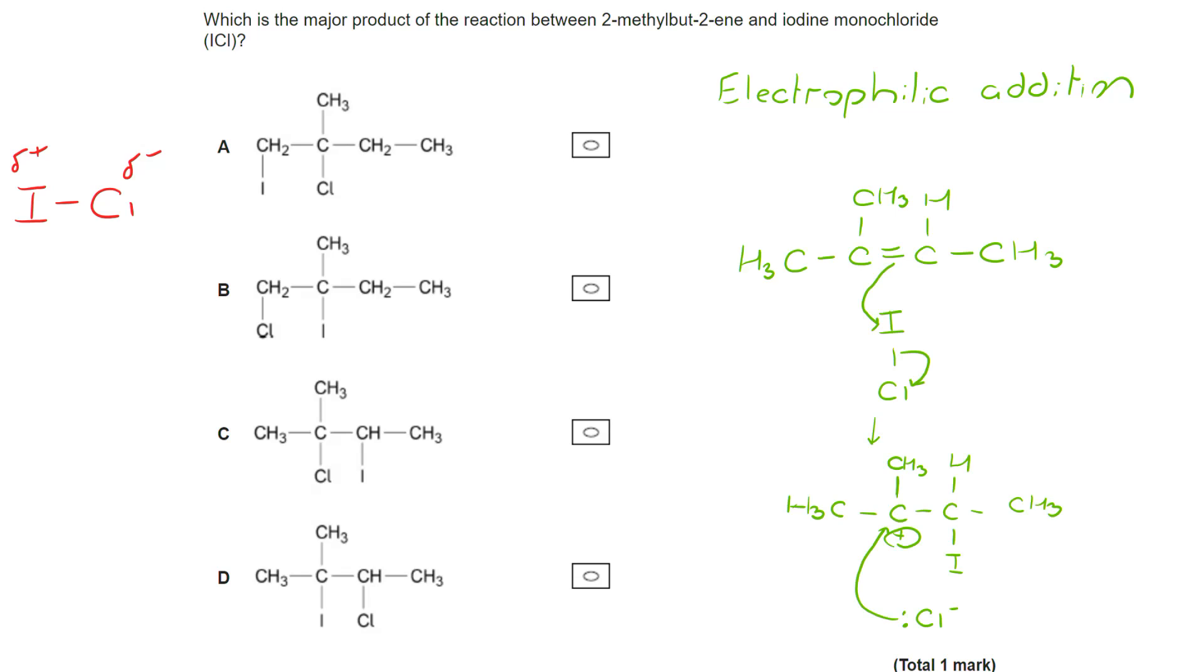At that point, we have a Cl minus, which can attack the positive carbocation. And that is going to go in on the carbon that we can see we've identified as a carbocation. And I think it's important to note here that this is a tertiary carbocation. If the I had gone on that carbon, we would have been left with a secondary carbocation intermediate. And tertiary carbocations are more stable and therefore lead to the more likely product, the major product. Correct answer is C.